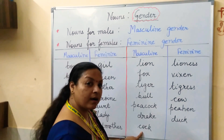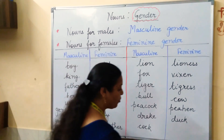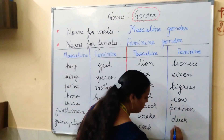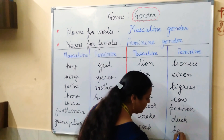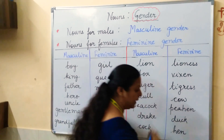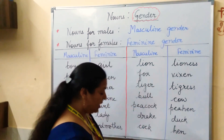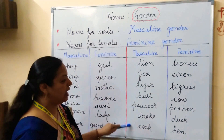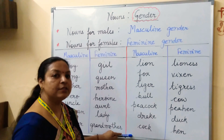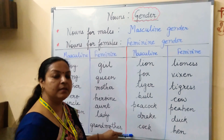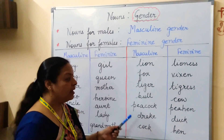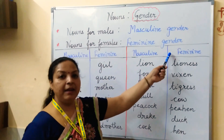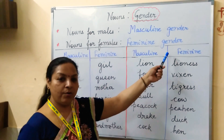Cock is also a bird, and its feminine gender is hen. In the same manner, we have a long list of animals and birds which are both of masculine and feminine gender.